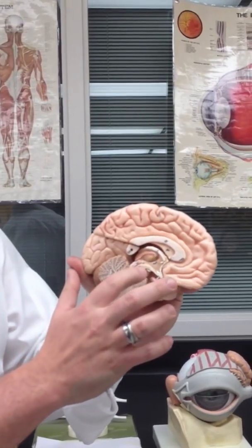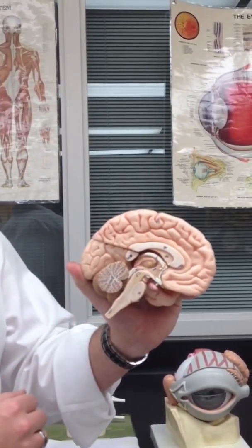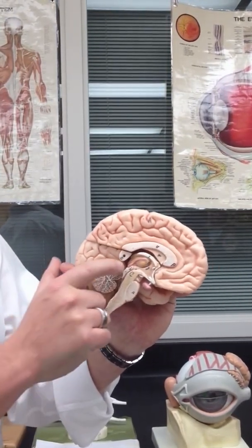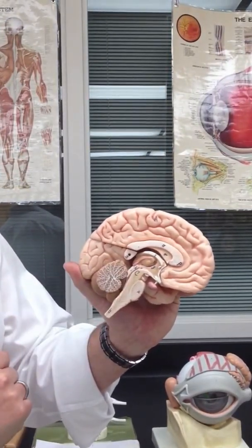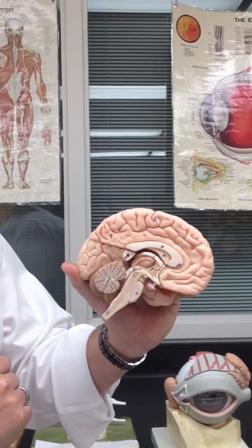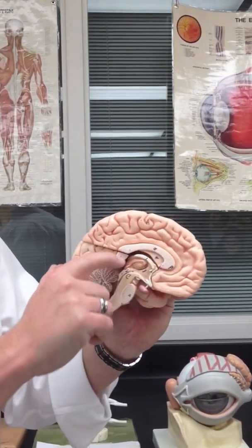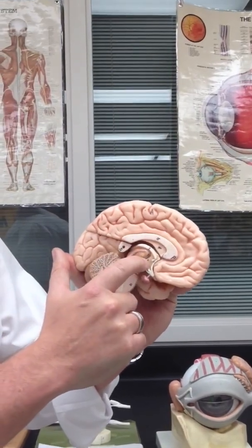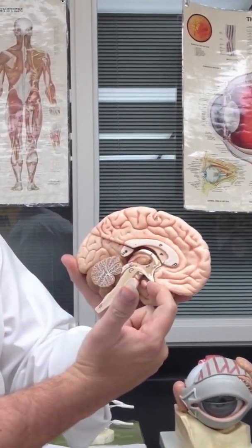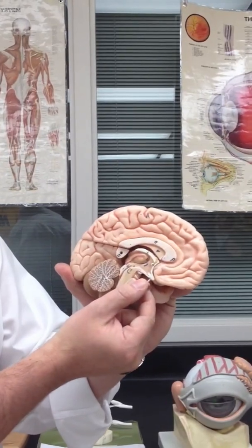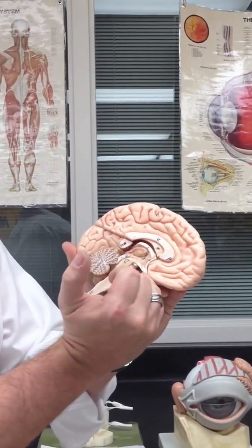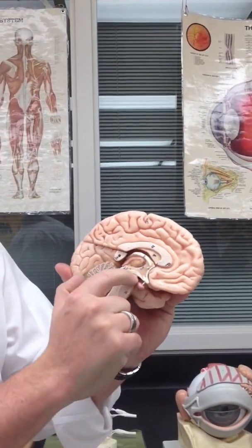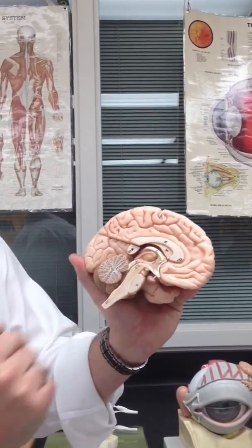In the anterior portion of the midbrain, we call that the crus cerebri or the cerebral peduncles. Behind that, we have the superior and inferior colliculi of the corpora quadrigemina. Right above that is the pineal gland. The thalamus and hypothalamus lead to the stalk of the infundibulum that holds the pituitary gland. The optic chiasm is where peripheral vision crosses, and back there we have the mammillary bodies.